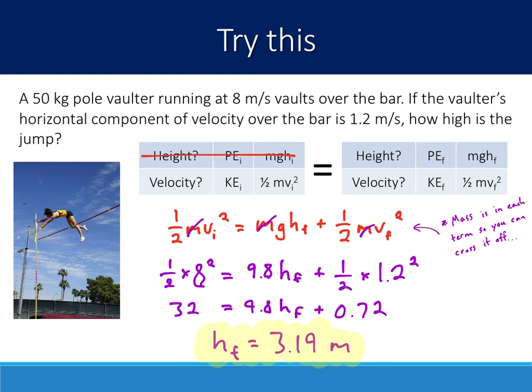Alright, now I'm substituting in the other values that I know. I'm going to have the height, the initial velocity, solving for the height, and this 1.2 is that horizontal speed over the bar. That's squared. Remember to square your answer on the other side as well. I should end up with a height of about 3.19 meters.